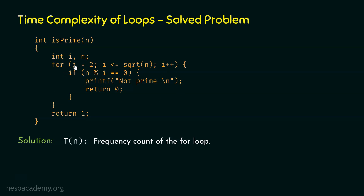Within this for loop we have an if construct. Here we are checking if n mod i is equal to 0, then execute these two statements. In other words, we are asking: is it true that n is not a prime number? We are comparing n mod i with 0. If n is divisible by some number, or if the remainder of n mod i is 0, then 'not prime' should be displayed on the screen and 0 must be returned from this function. Because of this return statement, the loop will terminate abruptly — it will not complete its iterations and will not execute up to square root of n.